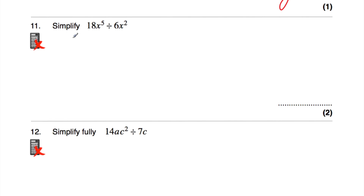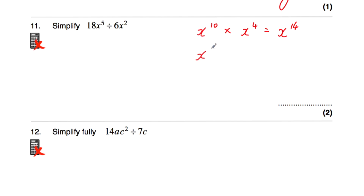Question number 11: simplify 18x⁵ divided by 6x². Before we do this, note: when multiplying terms with the same base you add the powers (e.g., x¹⁰ × x⁴ = x¹⁴). Likewise, when dividing terms with the same base, you subtract the powers — so x⁸ ÷ x³ = x⁵. This is the law of indices we'll use here.